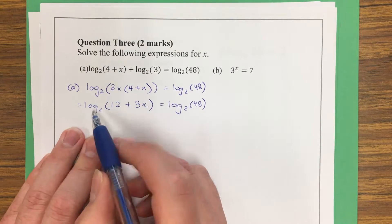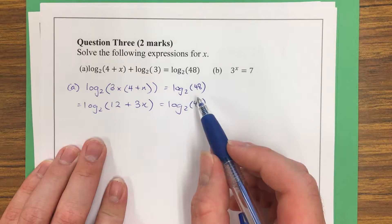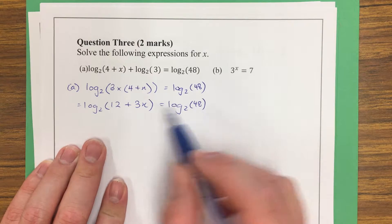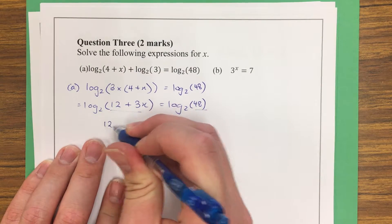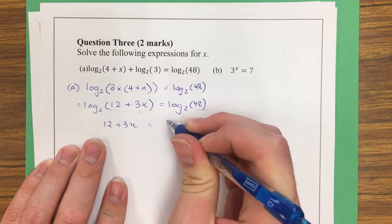And as we've done in class, when the left hand side is completely logged, and the right hand side is completely logged, that means the insides must be the same. So, 12 + 3x is equal to 48.